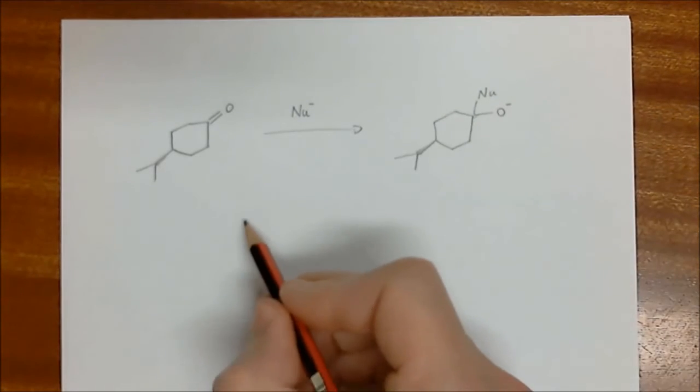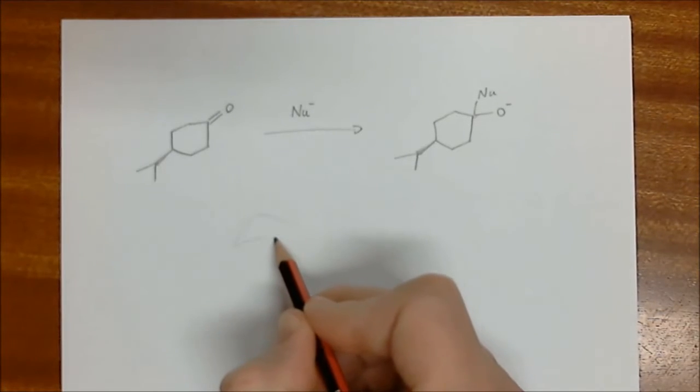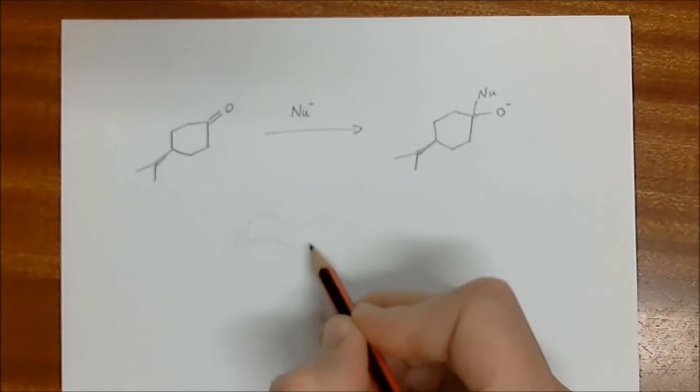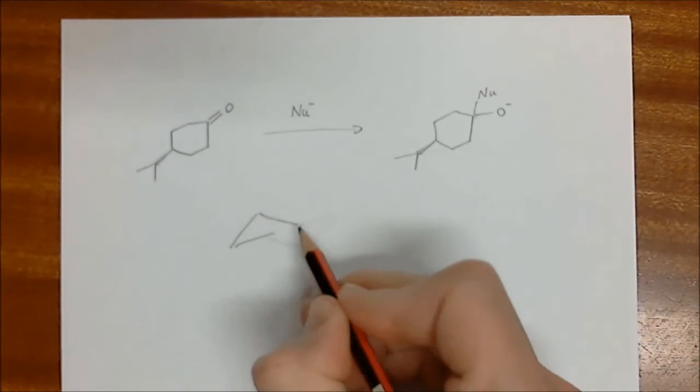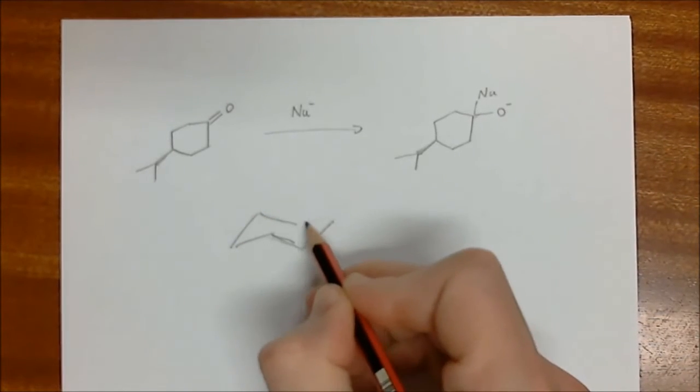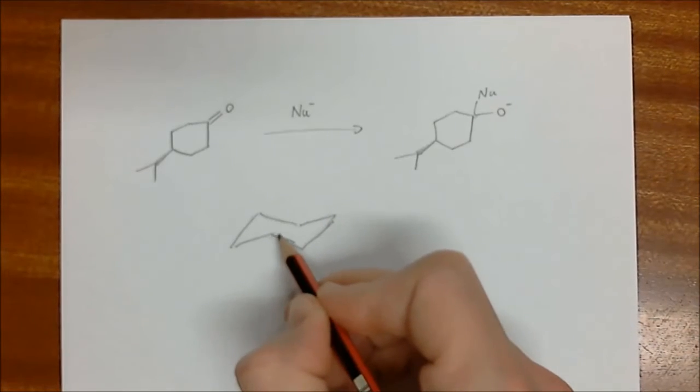So if we had to draw out just the chair structure of this compound, we would get something like that. Sorry, it's quite light. Let's pull that in. All right, so this is the chair. Everything is roughly parallel to each other.